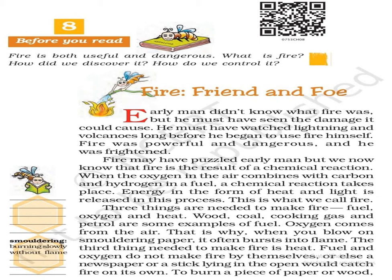Now let's read and understand the chapter — Fire, Friend and Foe. आग, दोस्त और शत्रू. Early man didn't know what fire was, but he must have seen the damage it could cause. आदि मानव नहीं जानता था कि आग क्या होती है, परन्तु उसने इससे होने वाली हानि अवश्य देखी होगी. He must have watched lightning and volcanoes long before he began to use fire himself. स्वयं आग के प्रयोग करने से बहुत पहले उसने आकाशीय बिजली तथा ज्वालामुखी पर्वतों को बड़े ध्यान से देखा होगा. Fire was powerful and dangerous and he was frightened. आग शक्तिशाली और खतरनाक थी और वह इससे भयभीत था.